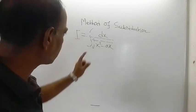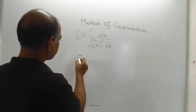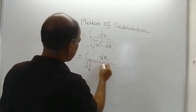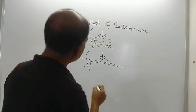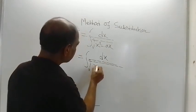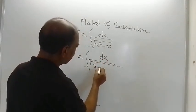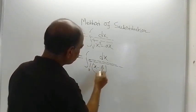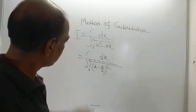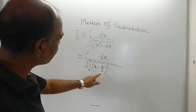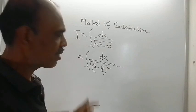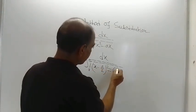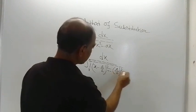This under root quantity can be written as: integration dx divided by, first you put this under root sign, then you write this way. Since minus ax is there, you write this way: x minus a by 2 whole square. So, x square minus ax plus a square by 4 means a by 2 whole square. That term is extra here, so to address that term, you write this way.